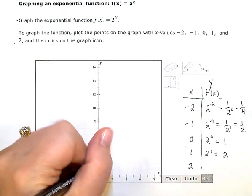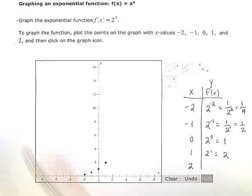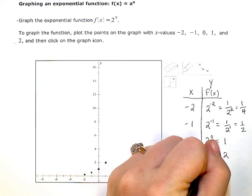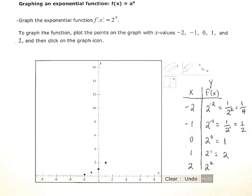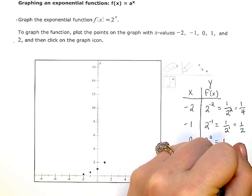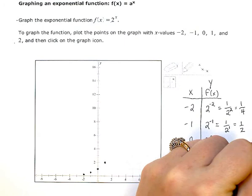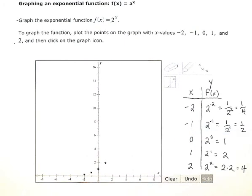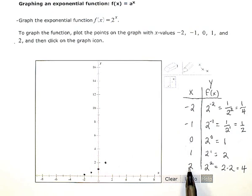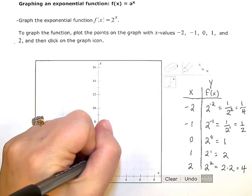It's going to put a dot about right there. And then the last one, we're going to do base 2 raised to the exponent 2, or 2 squared, which is 2 times itself, or 4. So now using your plot point tool again, you're going to put in the coordinates 2 comma 4, and it'll put a dot right there.